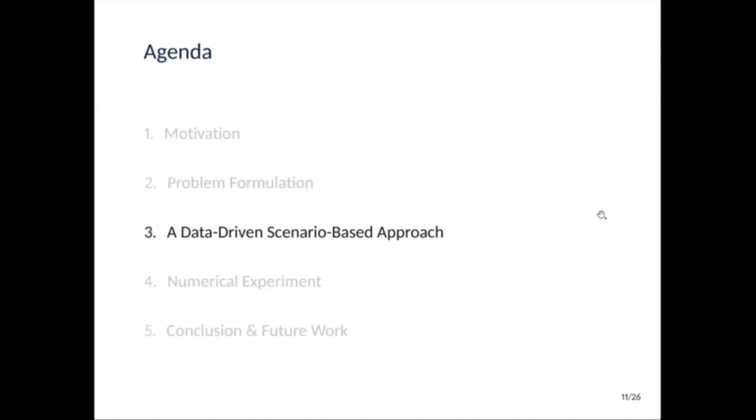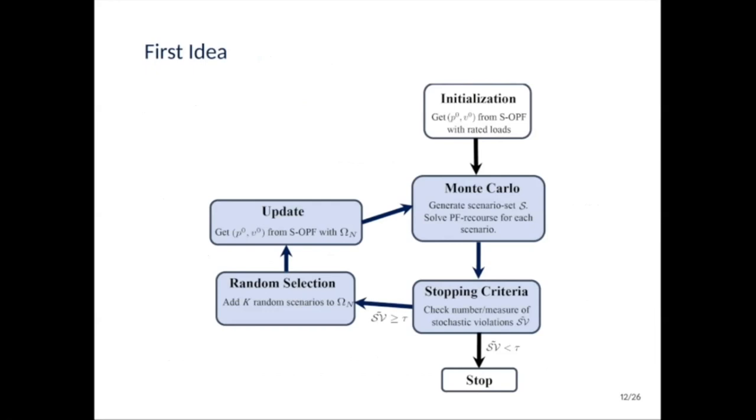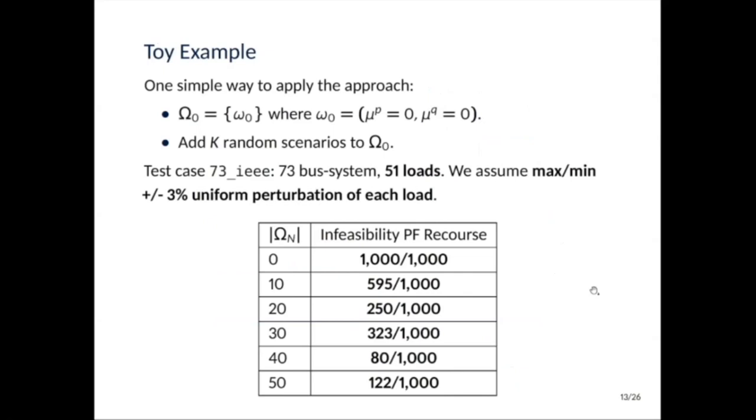This is the data-driven scenario-based approach that I will explain. The first idea you can think of when you're trying to solve this problem is first to initialize P0 and V0 with the solution with unperturbed loads. Then what you would do is generate a scenario set S, which is a subset of omega. And for each of these scenarios in S, you will solve the power flow recourse. So remember that when you're solving the recourse, you might violate your technical constraints. So if your P0 and V0 is not satisfying enough, you could add k random scenarios to your omega n, then recompute scenario OPF to get the new P0 and V0. And then again, until you reach your stopping criteria, which will be for us only a small number of recourses are infeasible.